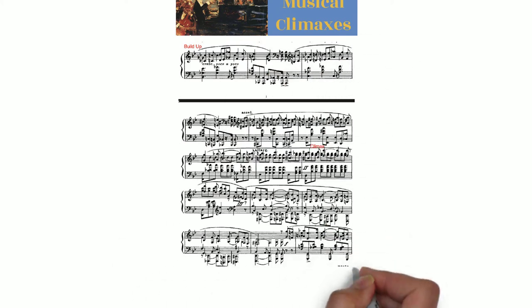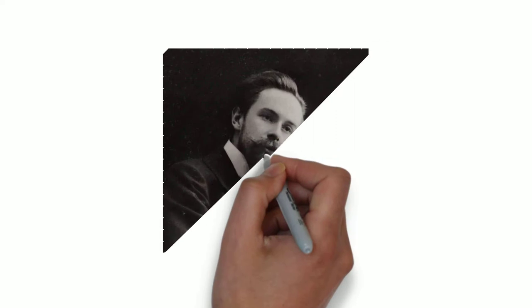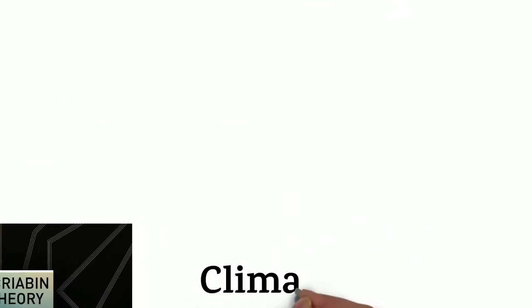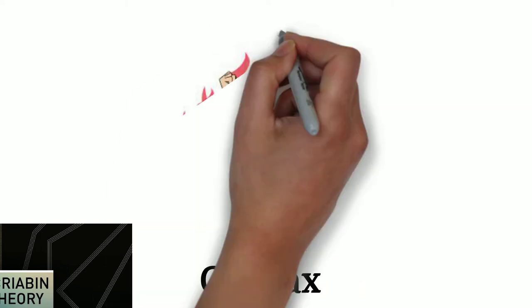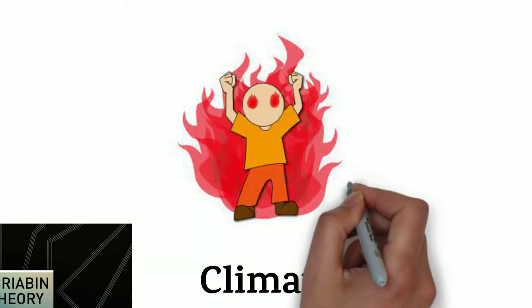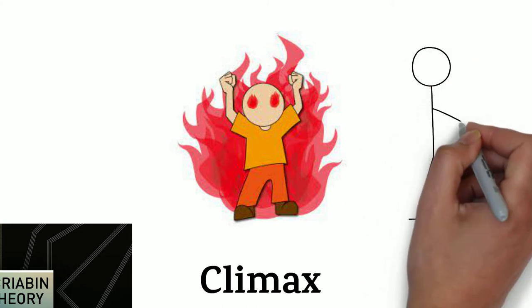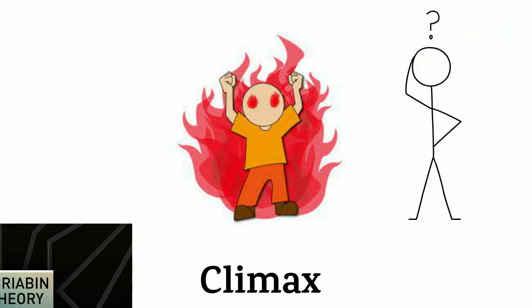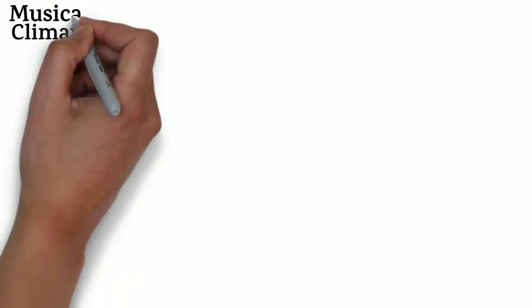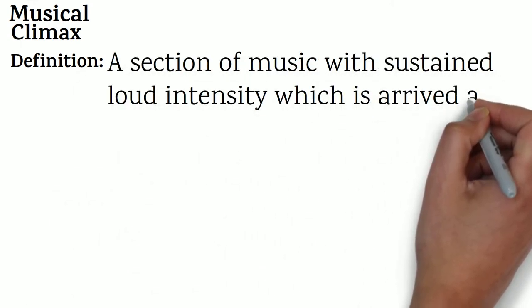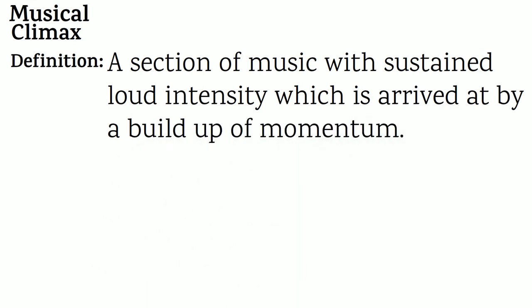First, let's talk about what a musical climax is and what it might have meant for Scriabin. The term climax refers to sections of peak intensity in music and other forms of art. Although deciding whether a section is a climax or not is admittedly vague and open to interpretation, I've made a definition for a musical climax for the purpose of this video: a musical climax is a section of music with sustained loud intensity, which is arrived at by a buildup of momentum.